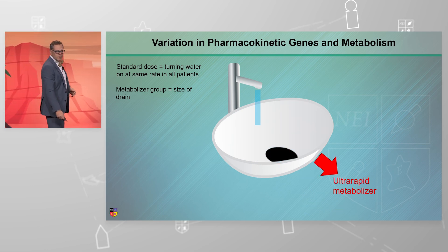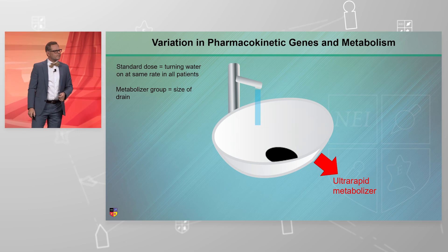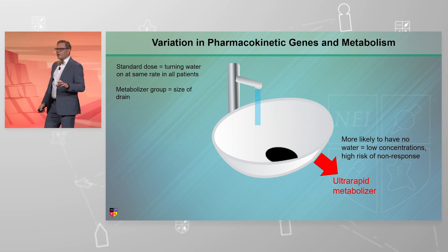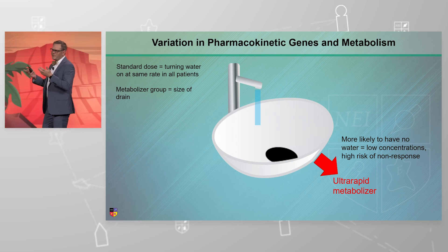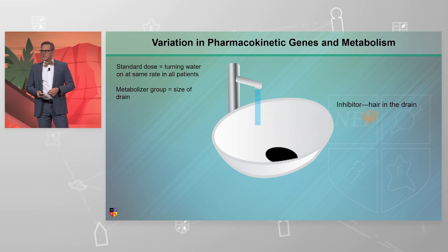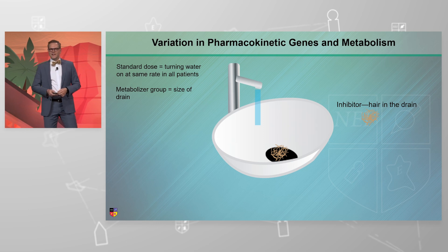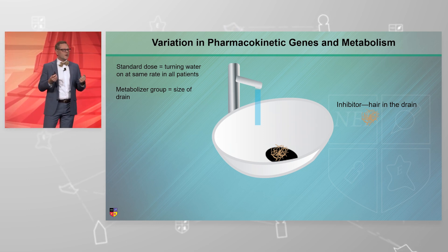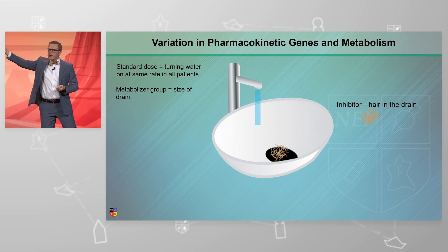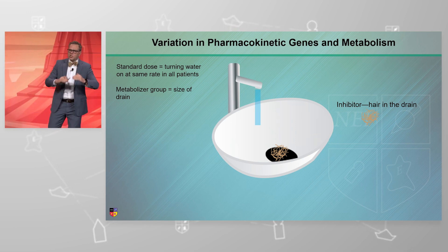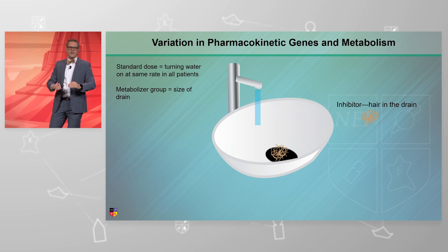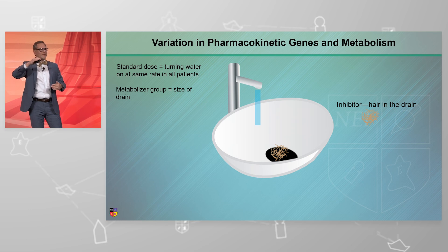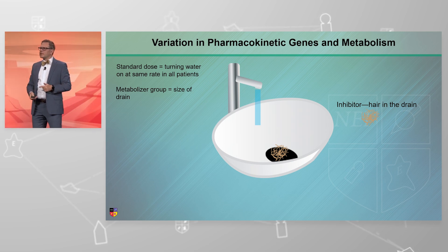You get the idea as we move on to the ultra-rapid metabolizer. Here's where it does get a little bit tricky. Like my daughter's bathtub, we sometimes get hair in the drain. This is the process we refer to as phenoconversion — I've given another medication or done something else that has changed the size of the drain in the bathtub. Because of that, I now have a difference in the water level other than what I would expect based on my pharmacogenetic testing.